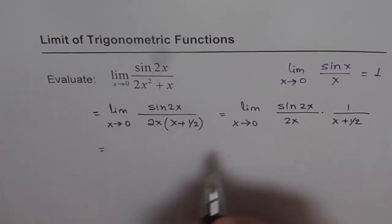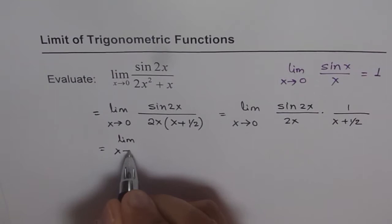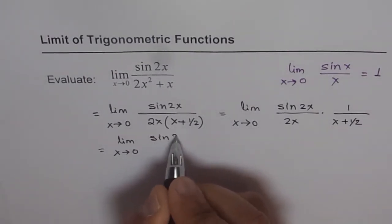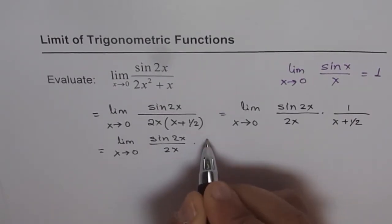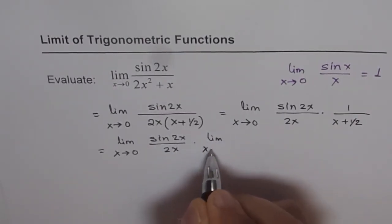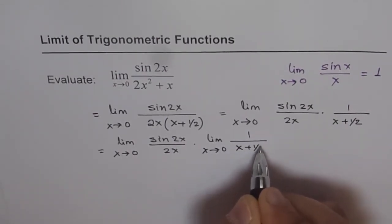Following the limit laws, we can write this as limit x approaching 0 for sin(2x) over 2x, times limit x approaching 0 for 1 over (x + 1/2).